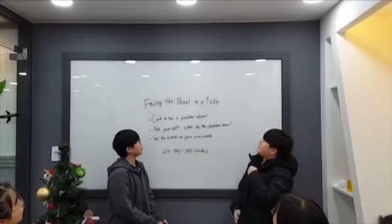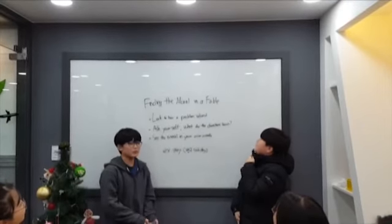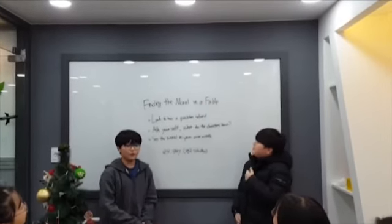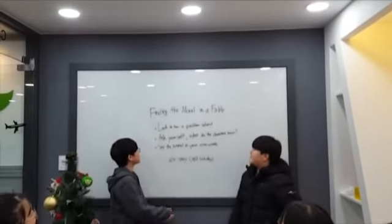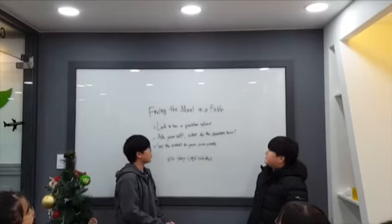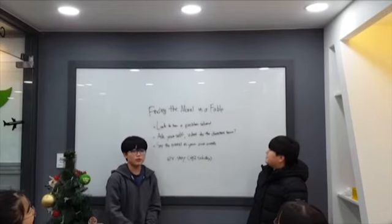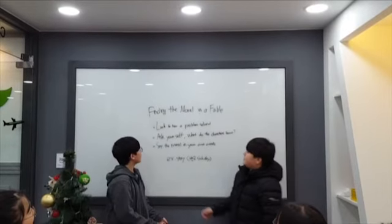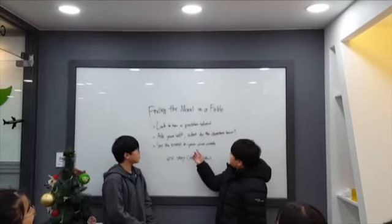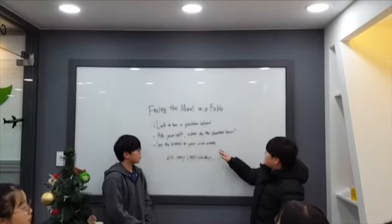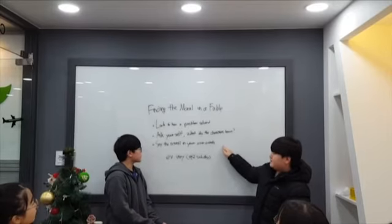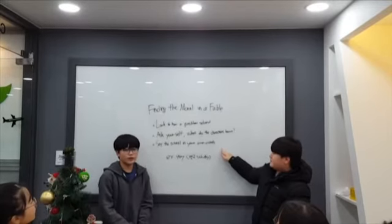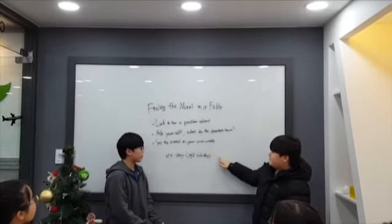Finding the moral in our table, we use three steps. First, look for how a problem is solved. And ask yourself, what should the character learn? Last, say the moral in your own words.